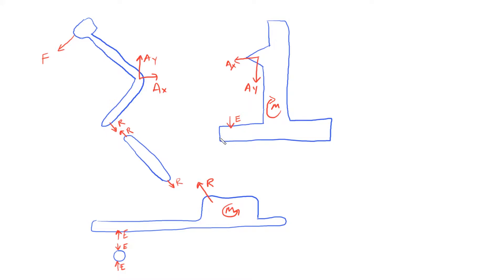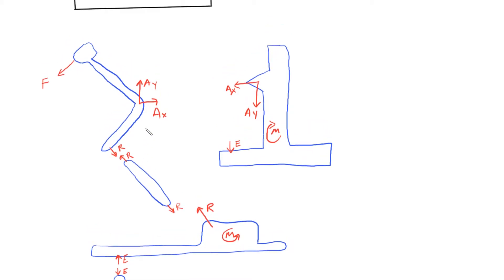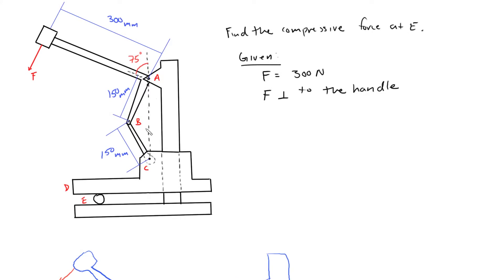We need to do some geometry, because the only thing we do not know for certain is the angle at which this R vector, or reaction vector, is occurring. We need to find the angle — either this angle or that angle — by using the geometry and dimensions given in the problem.